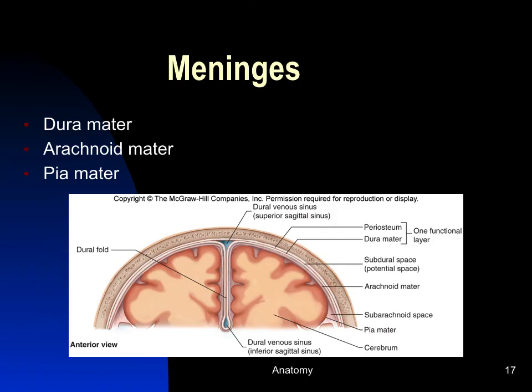The brain is covered by membranes called the meninges. The innermost layer, the pia mater, sits directly on the brain surface and dips into the fissures and folds. Above it is a network of fibers called the arachnoid mater. The outermost layer is the tough dura mater, which is continuous with the periosteum on the inside of the skull. Within the dura mater are blood sinuses that collect fluid recycled from the brain.